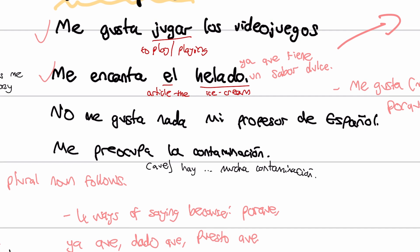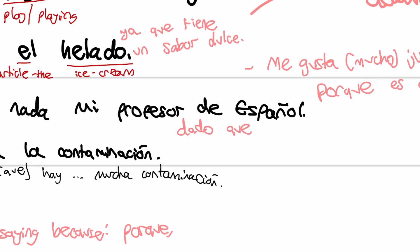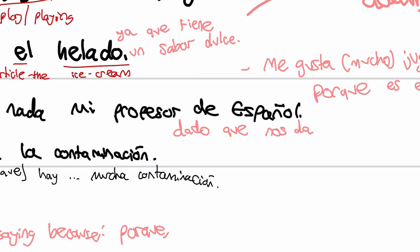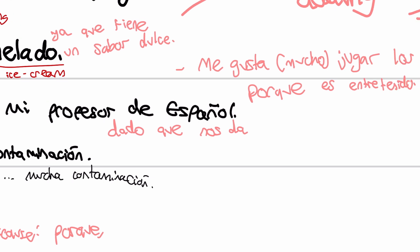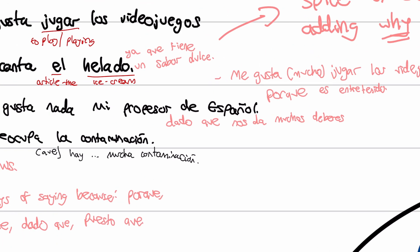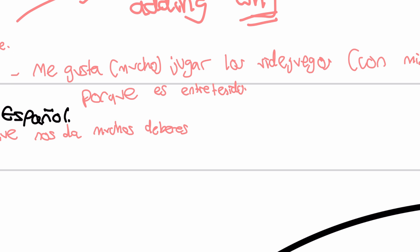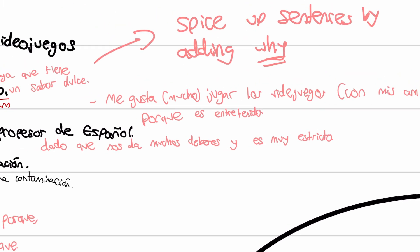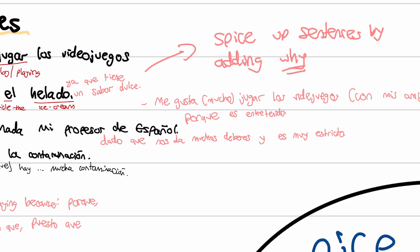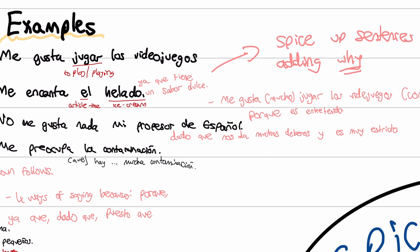Next: no me gusta nada mi profesor de español. Dado que nos da muchos deberes. So I don't like at all my Spanish teacher because he gives us a lot of homework. And es muy estricto — he is very strict. So you probably know most of these words — putting them together is the hard part, forming these longer sentences with connectives. No me gusta, then a noun, then the because, and then two reasons.